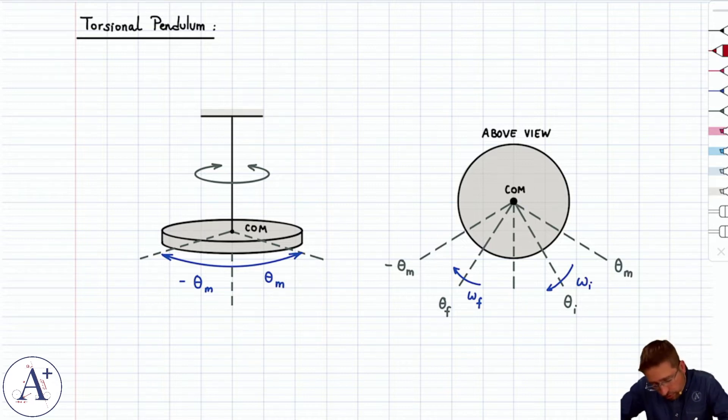Now as a reminder, the torsional pendulum has a restoring torque tau of t equals minus kappa theta, where kappa is the torsional constant, and associated with this we have torsional potential energy, which is one-half kappa theta squared.